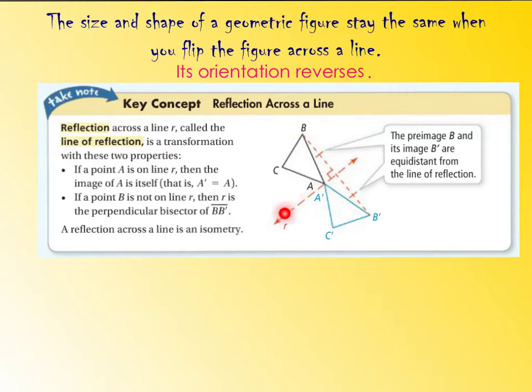So this line that we are reflecting over is called our line of reflection. And what's really important to understand is if something's on that line, like for instance point A in this picture, when you reflect, point A remains in the exact same spot. It's now just called A prime.